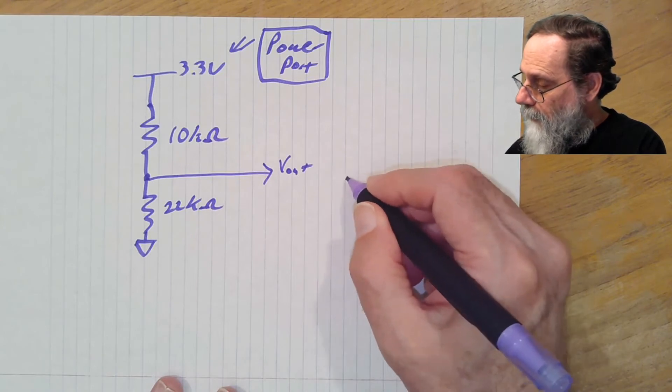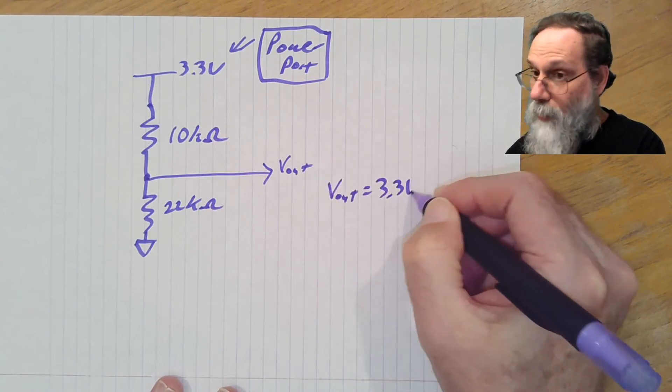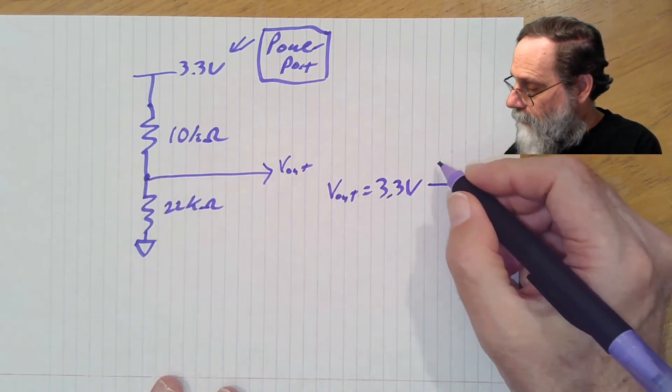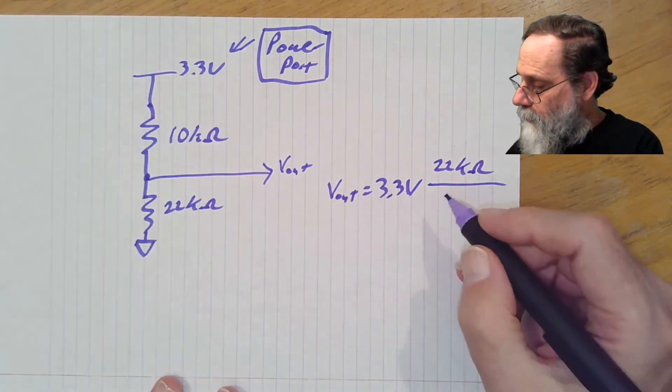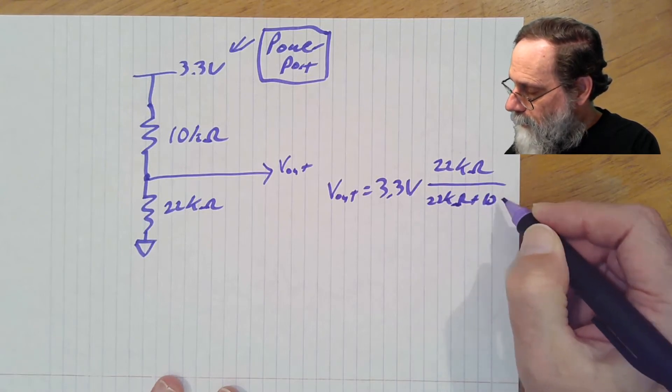Well, we're going to have Vout is equal to 3.3 volts times the resistor on the bottom, 22k ohms, divided by the sum of the two resistors, 22k ohms plus 10k ohms.